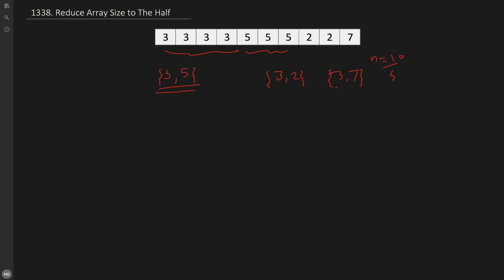So how do we solve this problem? The idea is: first, find the frequency of each element. Then sort the frequencies in decreasing order and greedily pick the most frequent number first, adding to our selected set until we reach at least half the array size. The count of distinct elements selected is the answer.